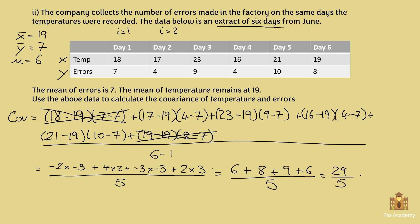And if you plug this into your calculator, you should get 5.8. So 5.8 is the covariance between temperatures and errors. So that's it for this exercise. Let me know if you have any questions and I'll be happy to answer them.